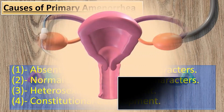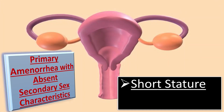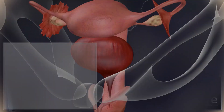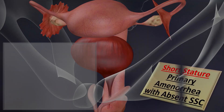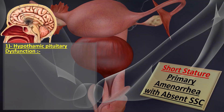We divide primary amenorrhea with absent secondary sexual characteristics into two main groups: the group with short stature and the group with normal stature. In the case of short stature with absent secondary sexual characteristics, we have two further subgroups: hypothalamic pituitary dysfunction and ovarian failure.